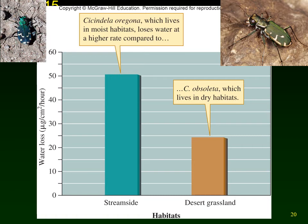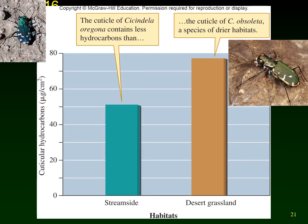Looking at two species of tiger beetles — one living beside a stream versus one living in a desert grassland. Water loss is measured in micrograms per square centimeter of surface area per hour. The streamside beetle in a moist habitat loses water at a much higher rate. When researchers looked at how the desert beetle avoids losing water, they found its cuticle — outer layer of skin — contains more hydrocarbons, essentially coating itself with a waxy substance that acts as a waterproof layer.